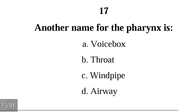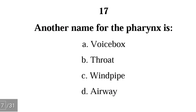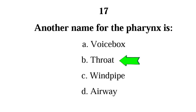Number 17. Another name for the pharynx is: A. voice box, B. throat, C. windpipe, D. airway. The correct answer is B. The pharynx is commonly called the throat.